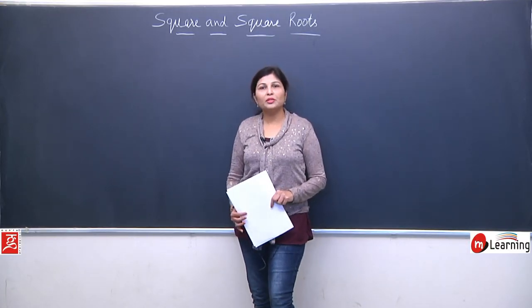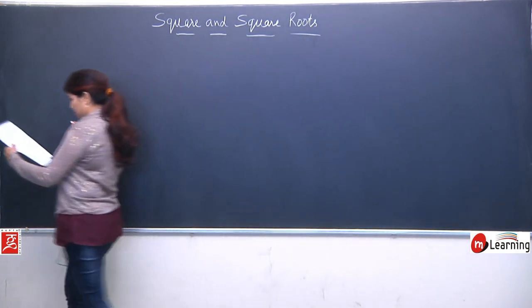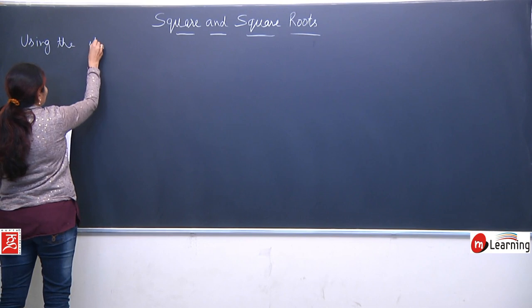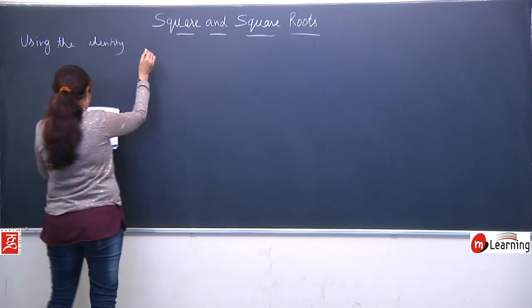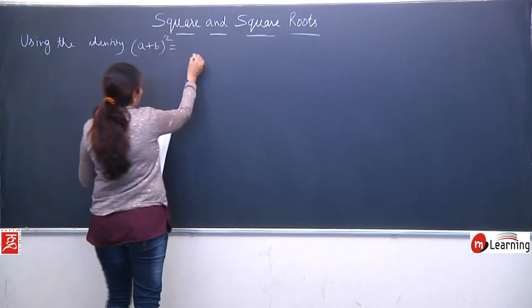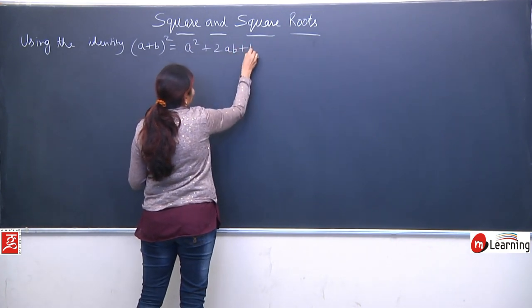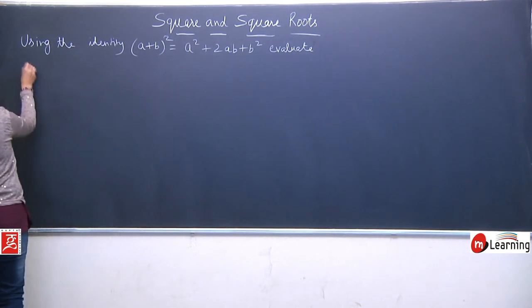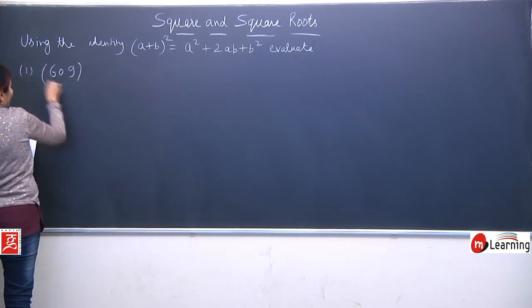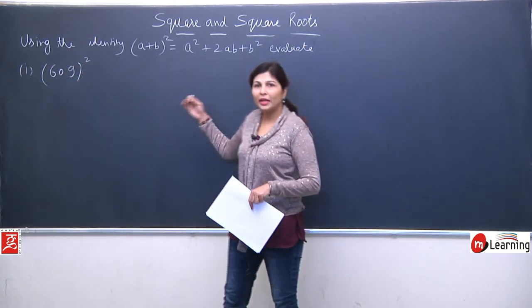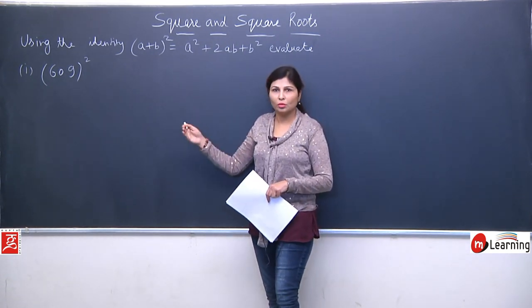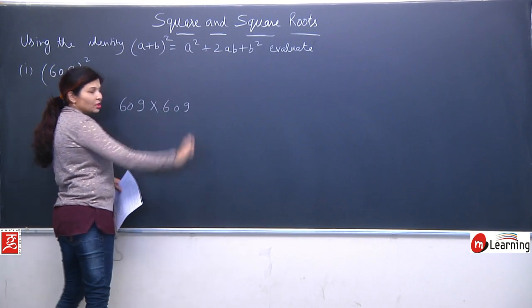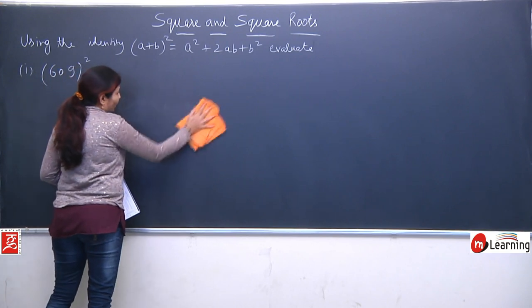Hi friends, we were solving some questions based on identities. Our next question is using the identity (a+b)² = a² + 2ab + b². As I told you earlier, we can find the square directly by multiplying 609 by 609, because the definition of square is number multiplied by itself. But it is very long and complicated, so we can use the identity here to find the square.